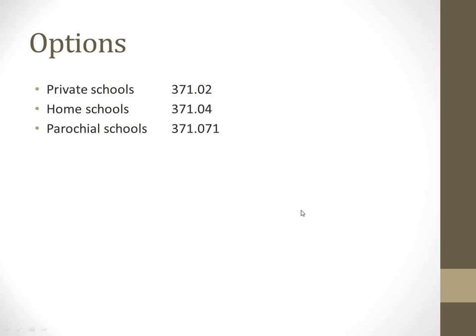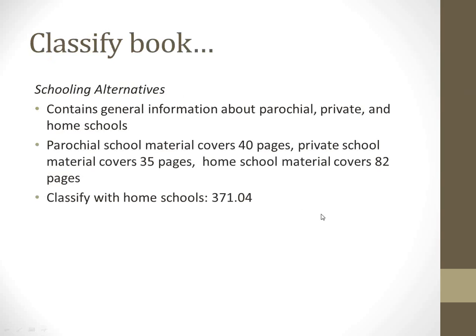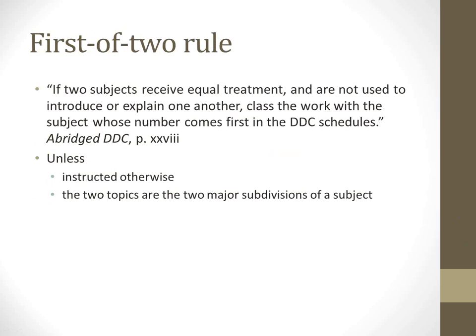Here are the three numbers for the various options, and according to the fuller treatment rule we would go with the number for home schools: 371.042. Now, remember all these rules - you take them in order and evaluate the first one first. If there's a subject that receives more full treatment than the others, you go with that one. But if two subjects receive equal treatment, then you go with the subject whose number comes first - that's the first of two rule. This is not a situation like the last one where we had one topic that received more full treatment. If you have a topic with two subjects treated equally, you go with the one whose number comes first.